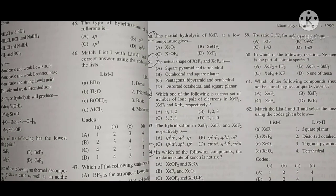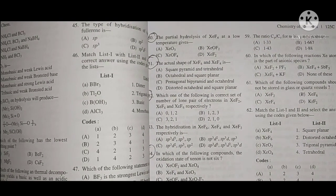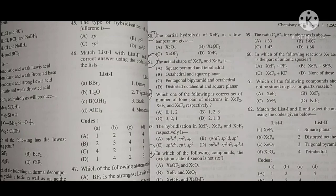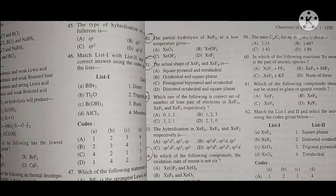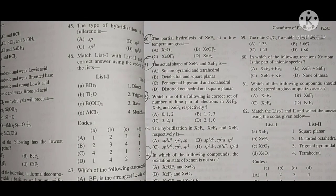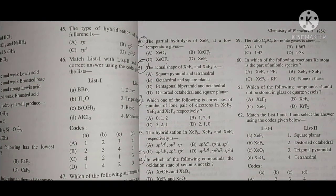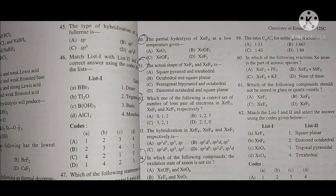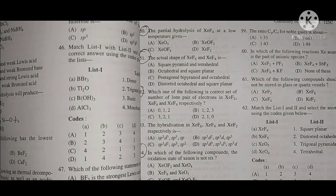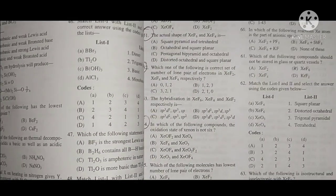The partial hydrolysis of XeF4 at low temperature gives XeOF2. If we do XeF6, we get XeOF2 and XeOF4. The option is B, XeOF2. This is a very easy question.